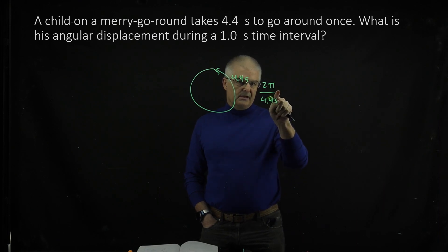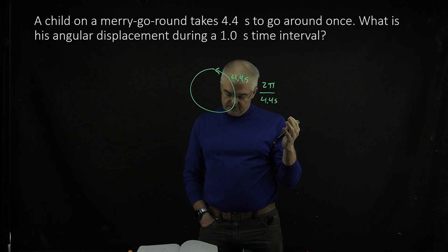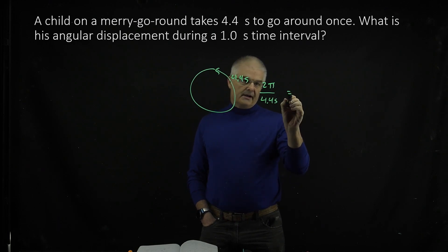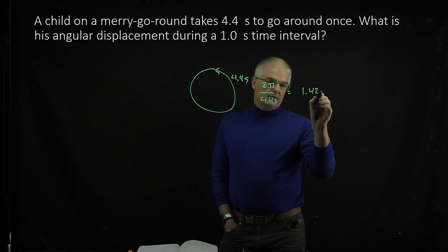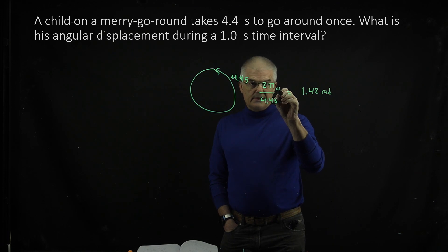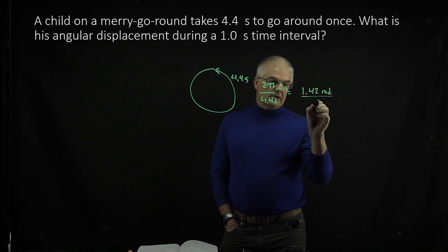So this is the speed at which the person has traveled. I figured that by taking 2 times π divided by 4.4, and I got 1.42 radians per second.